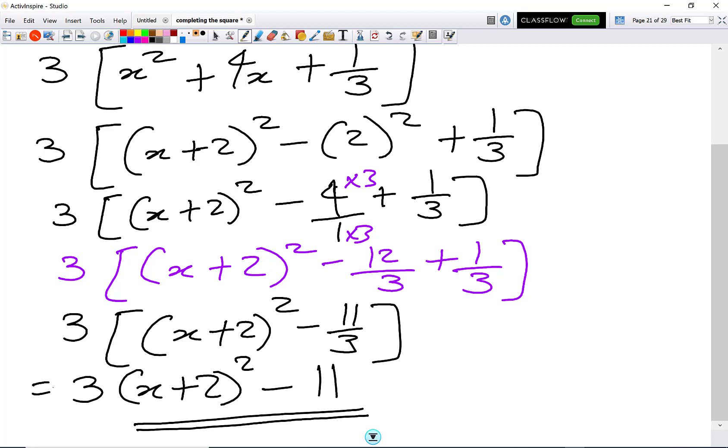Now if they say to me work out the minimum point, so we can draw our quadratic graph. Let's start off with x². That's the x² graph.